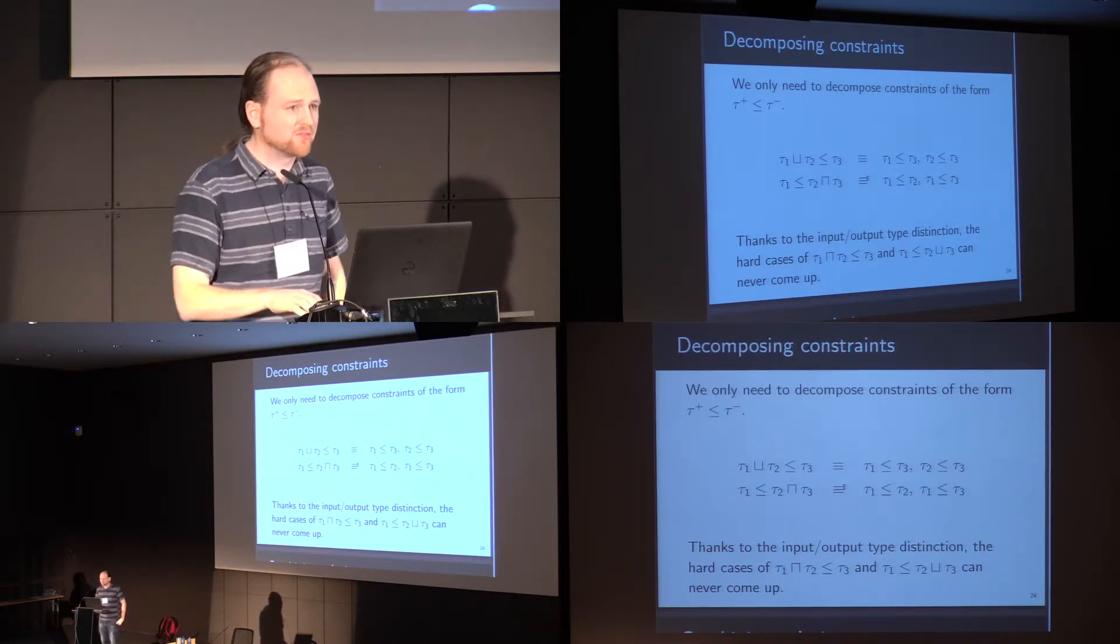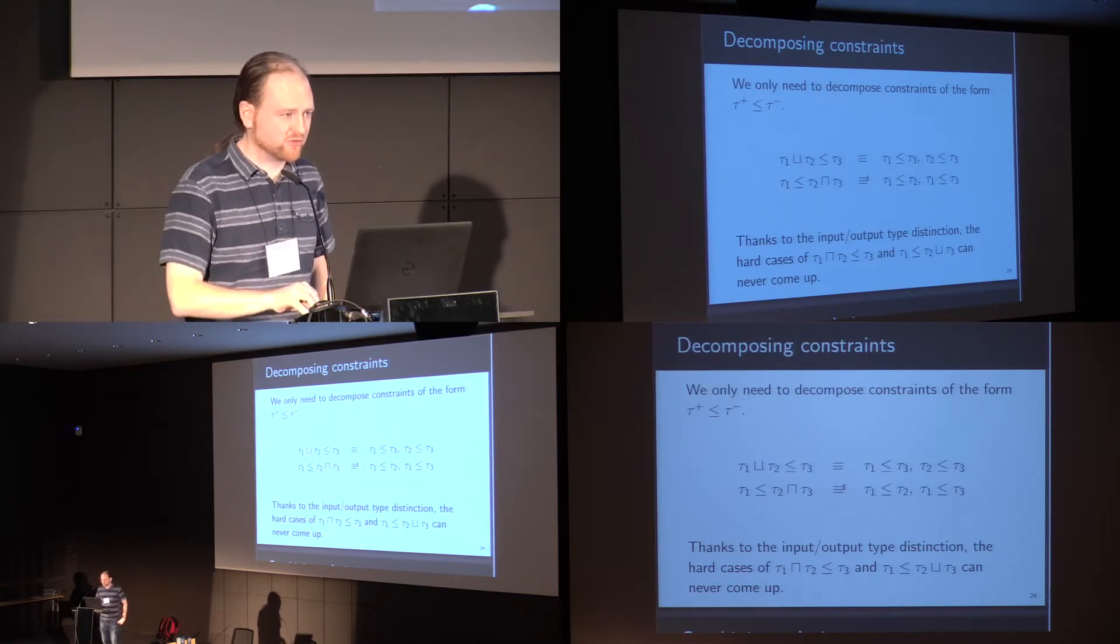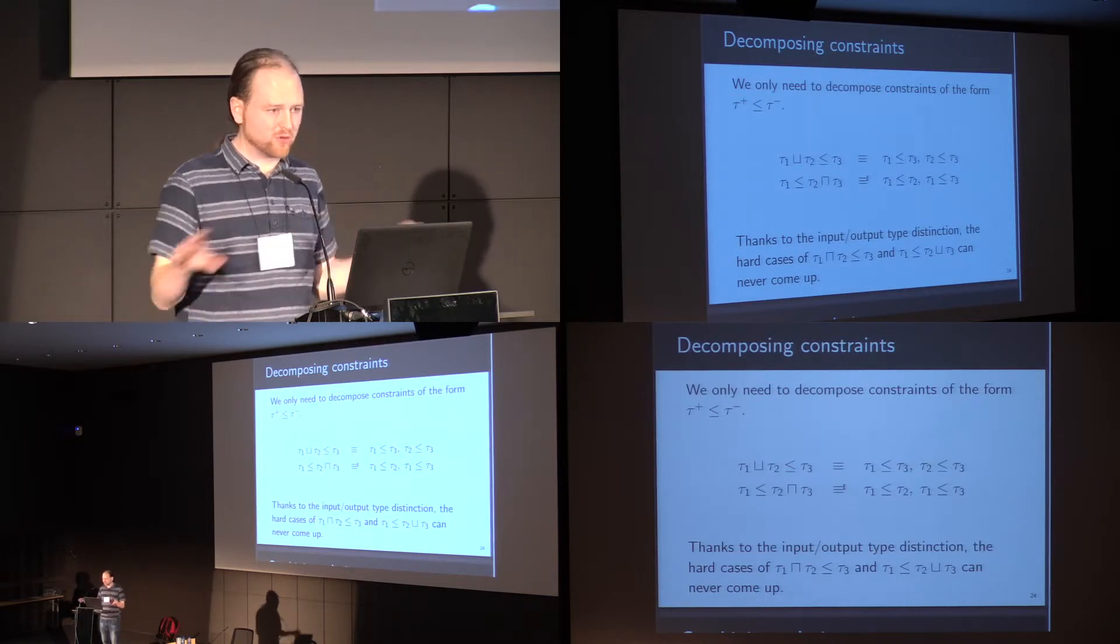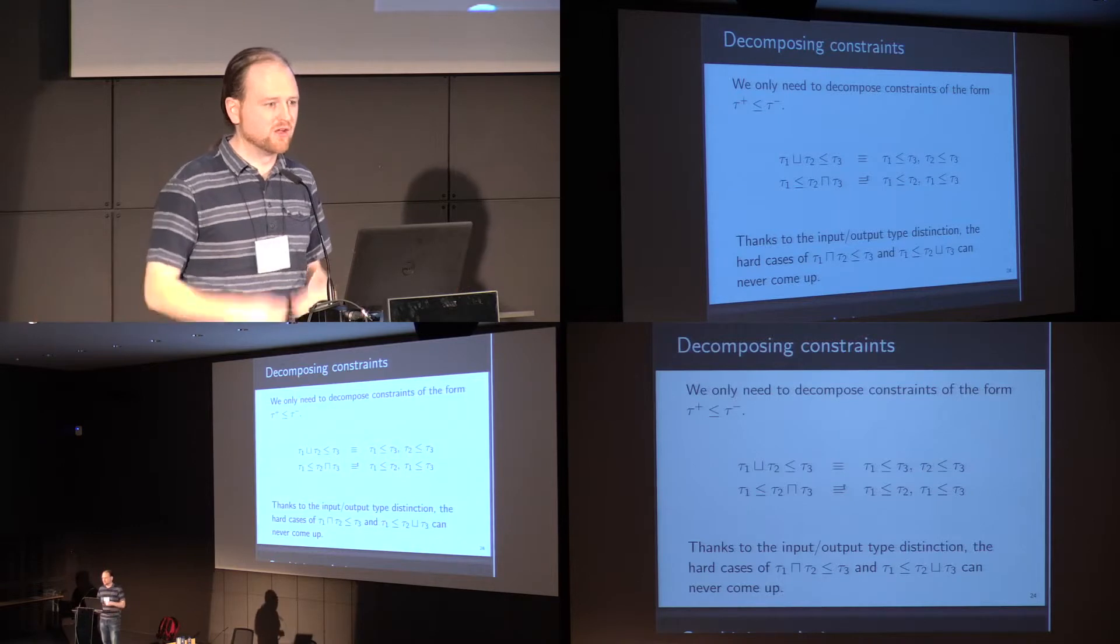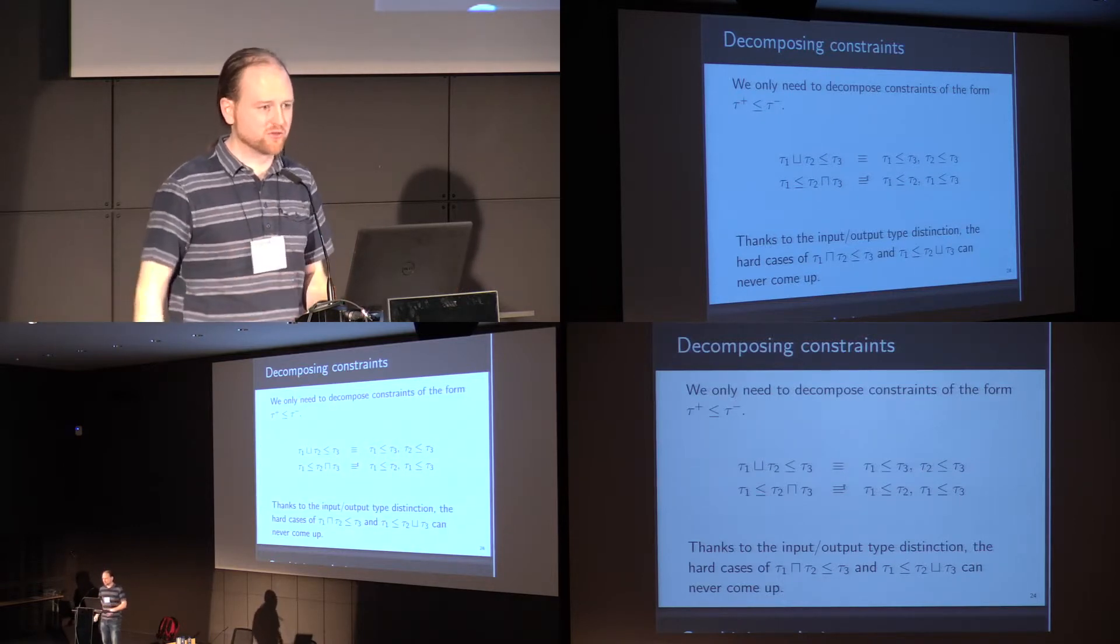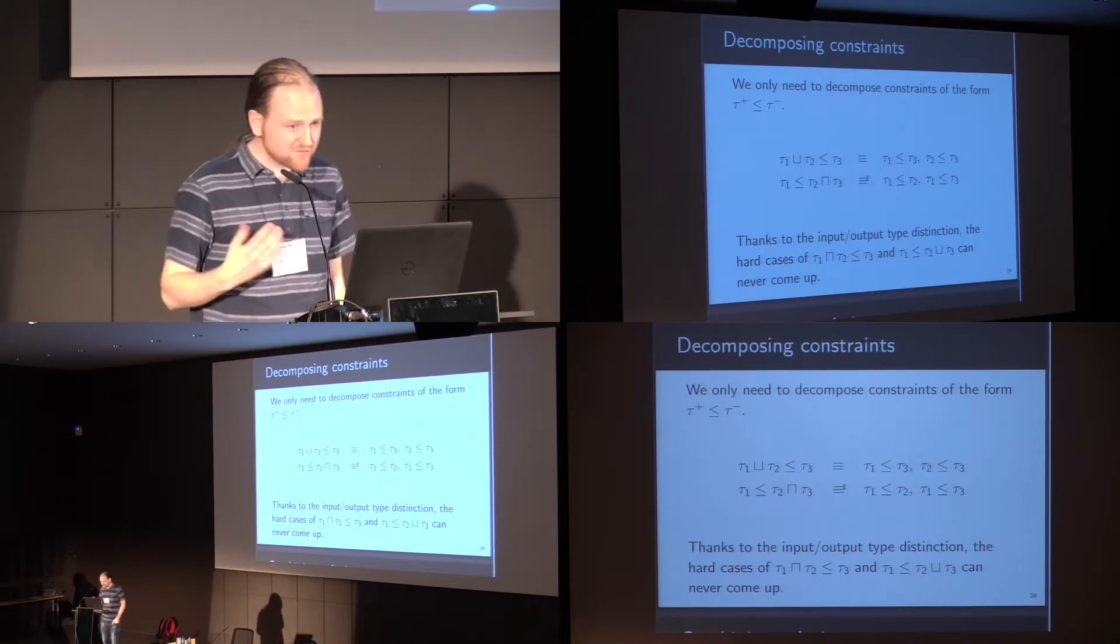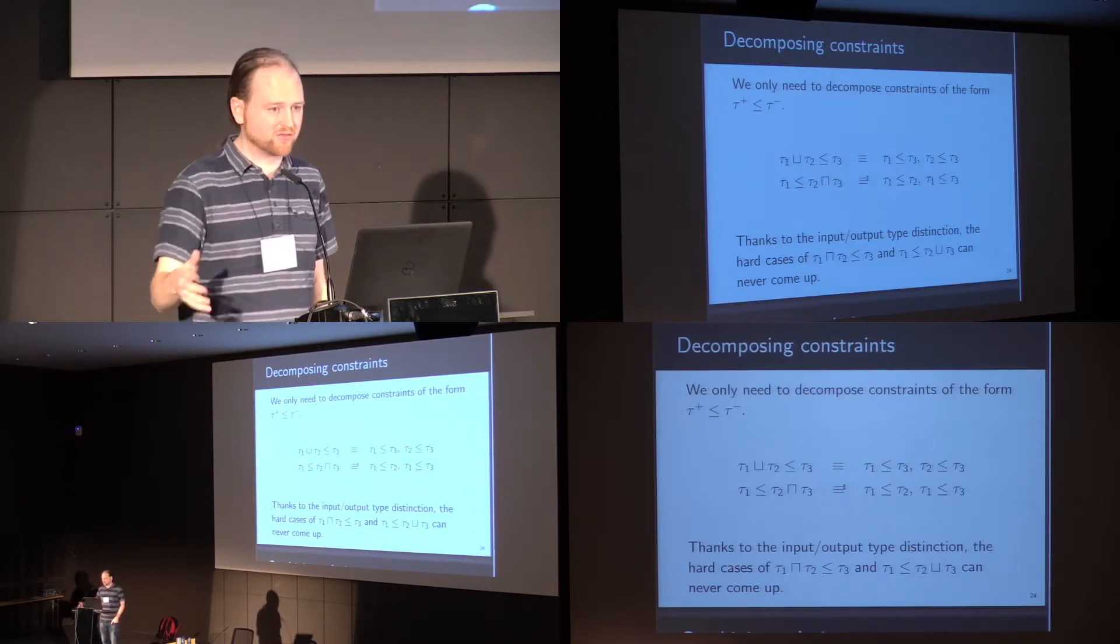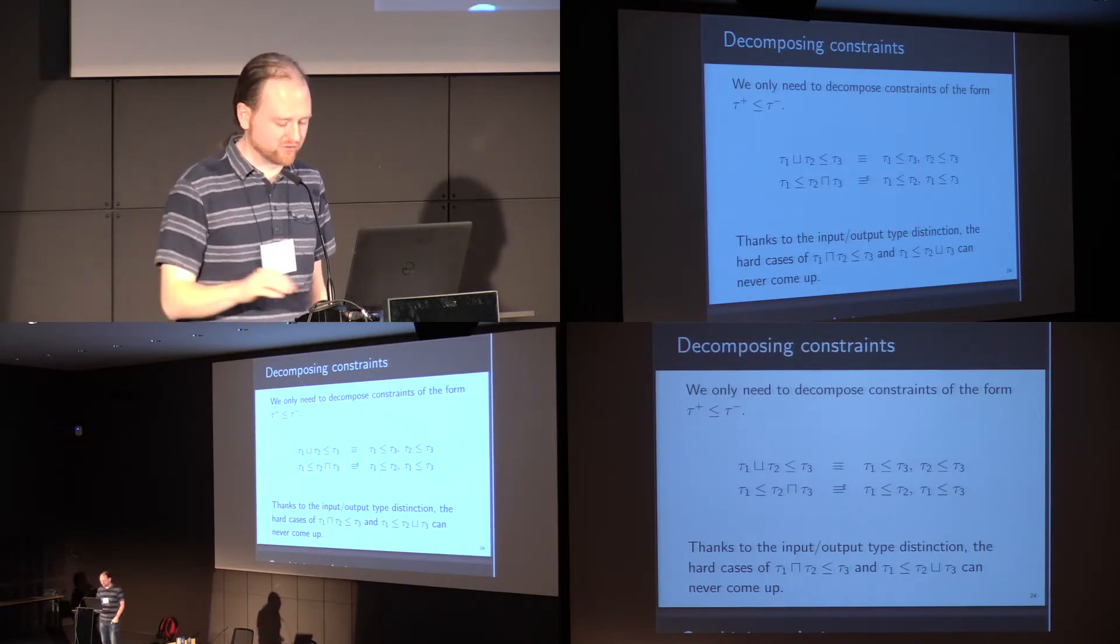So this means that we can do unification much as standard unification is done in the guts of an ML type checker. We're just decomposing a large complex constraint into a collection of smaller constraints, breaking them all down further and further until we get to atomic constraints, and then eliminating those with replacements. The only difference is that the result is a bi-substitution, giving different answers for the positive and negative occurrences of a variable.